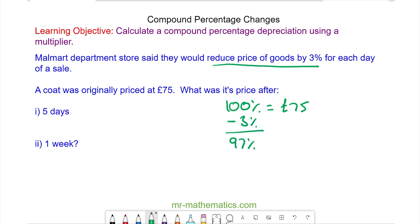So we're left with 97% and to convert that to a multiplier we divide it by 100 and we get 0.97. So this is our multiplier.